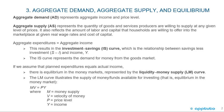MV equals PY, where M equals the money supply, V equals velocity of money, P equals the price level, and Y equals income.